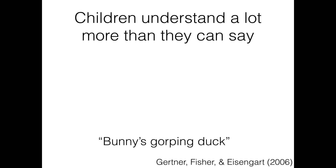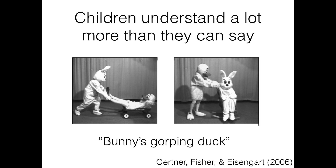Third, children know a lot more than they can say, and they can often interpret syntactic structures that they aren't yet able to produce. A strong test of this comes from experiments where you test whether children are able to use the order of words to figure out who did what to whom. For example, if you say 'bunny is gorping duck,' and kids have never heard the word 'gorp' before, even before their second birthday they still look more at pictures where bunny is doing something to duck, rather than pictures where duck is doing something to bunny. This means they've already generalized that the first noun — bunny — is the one performing the action, whatever that action may be.